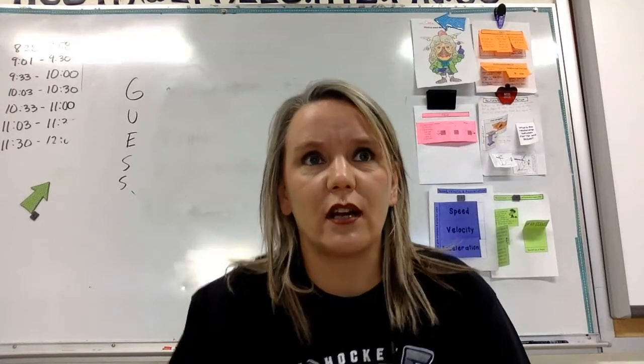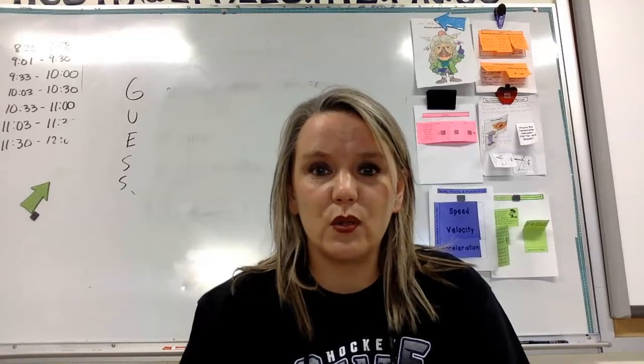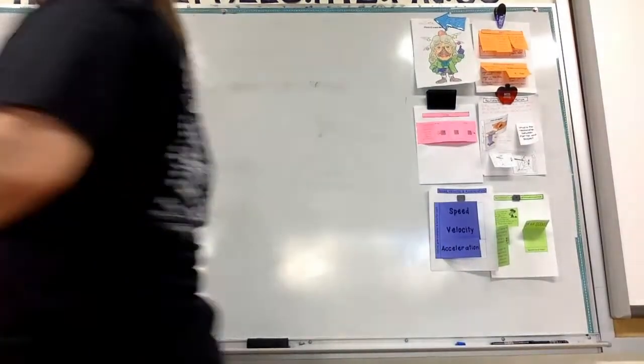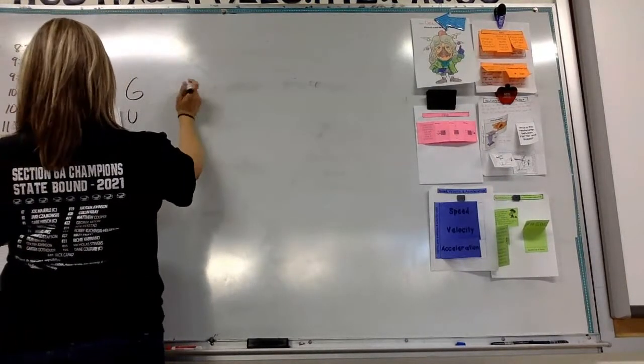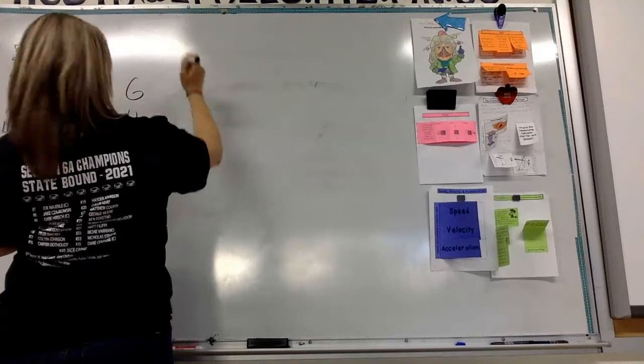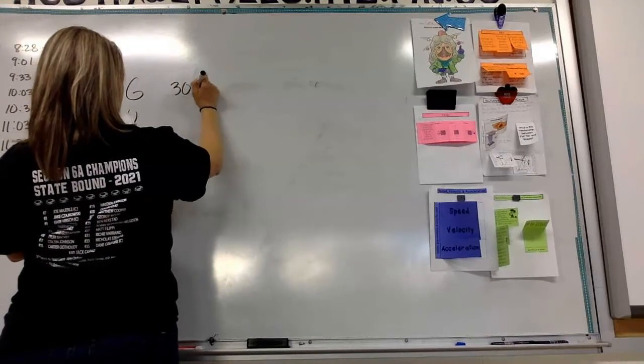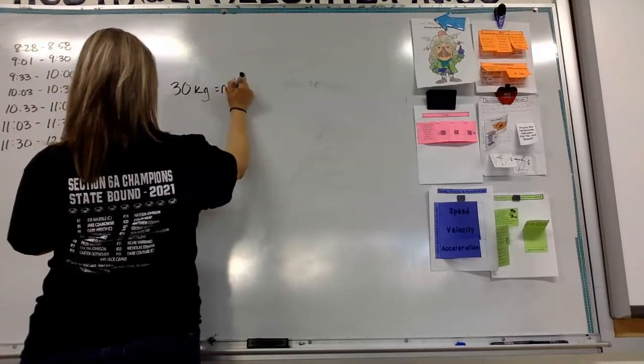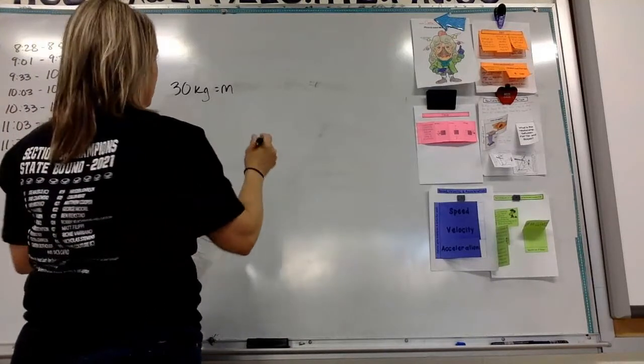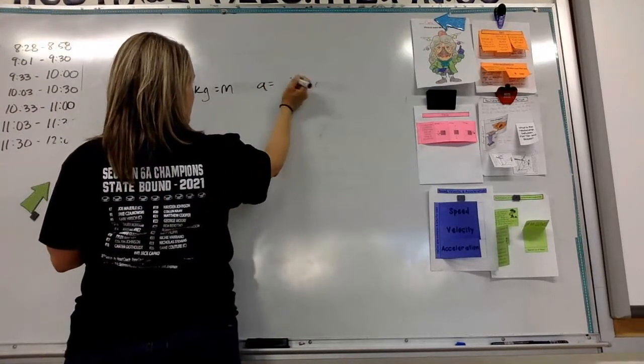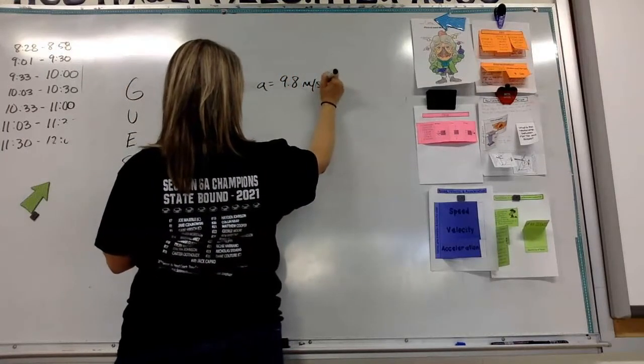Well, the acceleration is not just going to be the force of gravity, right? Because we've got some air resistance working against it. So what we'll have to do is we do know that we've got a 30 kilogram mass and we know that it is falling at an acceleration of gravity, which is 9.8 meters per second squared.